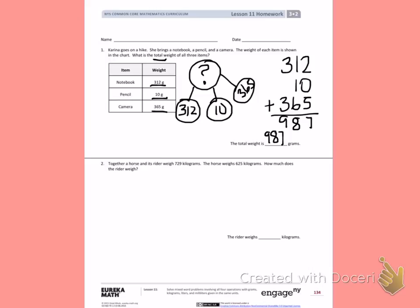Number 2. Together a horse and its rider weigh 729 kilograms. The horse weighs 625 kilograms. How much does the rider weigh?